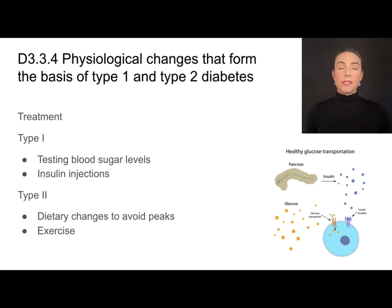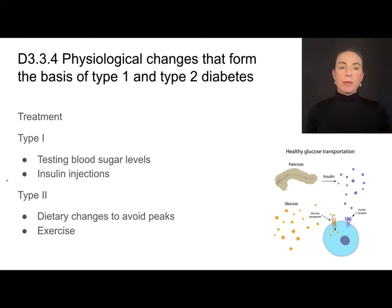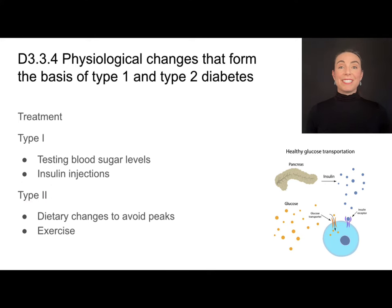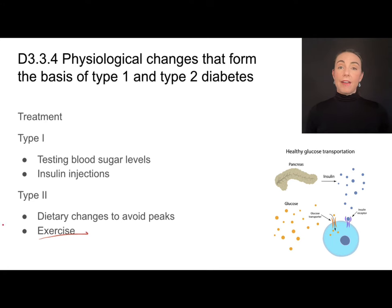Because there are different causes, the treatments for type 1 and type 2 diabetes are very different. In type 1 diabetes, caused by a lack of insulin production due to the death of beta cells, the treatment is to inject insulin, timing injections and testing blood sugar levels to ensure proper dosing. In type 2 diabetes, insulin injections are not part of the treatment plan because there is already plenty of insulin — it's just decreased sensitivity. Treatment for type 2 should include changes to diet to avoid huge spikes in blood glucose and plenty of exercise.